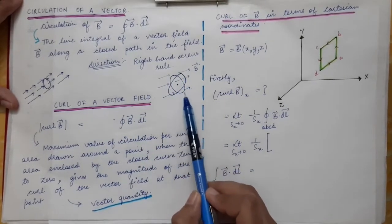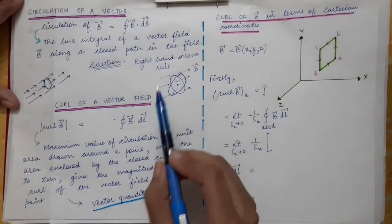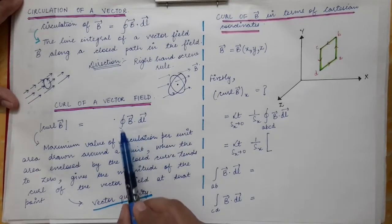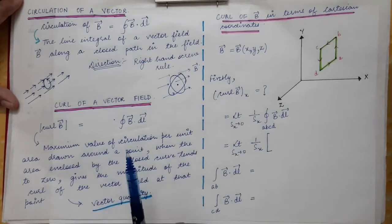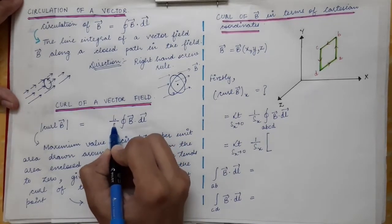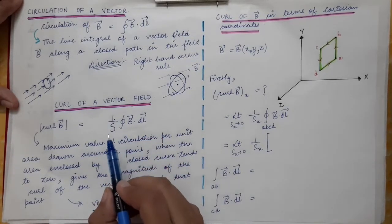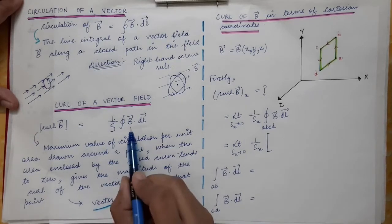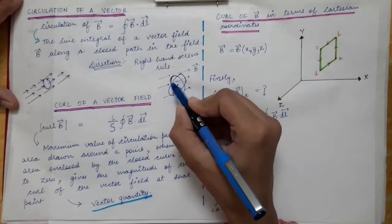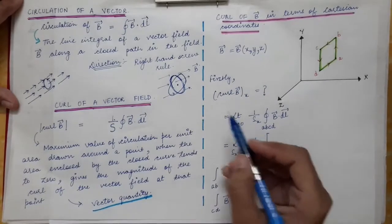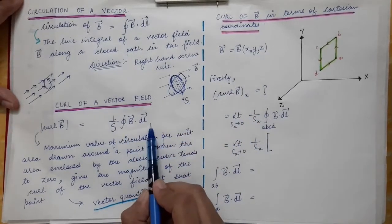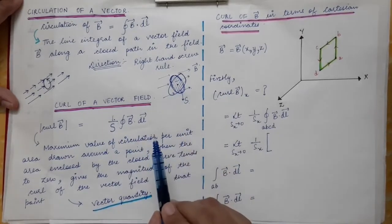There will be only a single closed path over which the circulation is maximum, and only that path is chosen. The curl of a vector field is defined as the line integral of the vector field over that closed path — the maximum circulation — divided by the area S enclosed by that closed path.